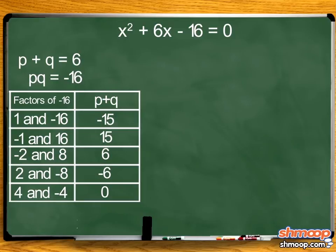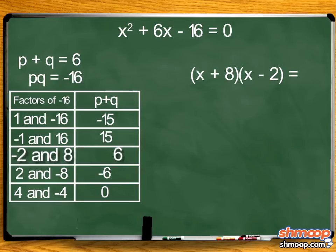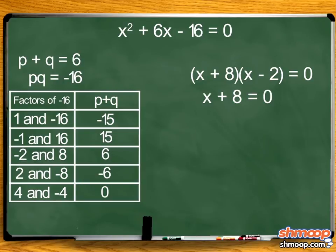We're looking for a p plus q value of 6, which only works for 8 and -2. That means x squared plus 6x minus 16 can be factored to (x + 8)(x - 2). So for the equation to equal 0, either x + 8 or x - 2 must equal 0.